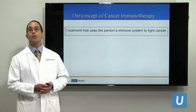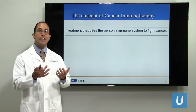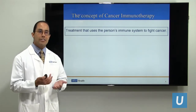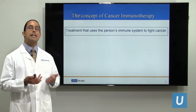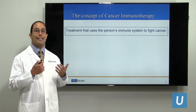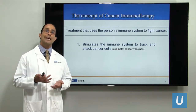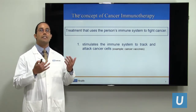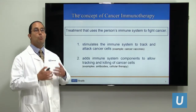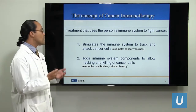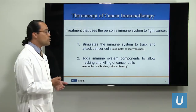First, discussing the concept of cancer immunotherapy. The idea is that when the immune system fails to hold up against cancer cells, that's when cancer arises. The idea of using a person's own immune system to fight cancer has been long-standing, but only more recently were we able to obtain good results. Because cancer cells can trick and escape the immune system, one way to treat is by stimulating the immune system using cancer vaccines, or by adding immune system components — such as antibodies or cellular therapy — to enable tracking and killing of cancer cells.